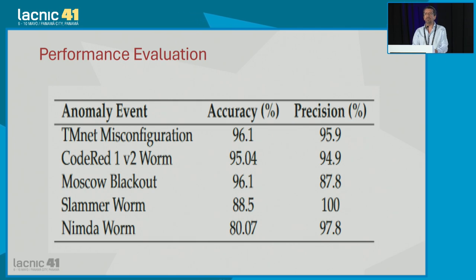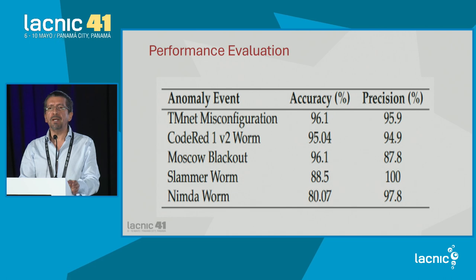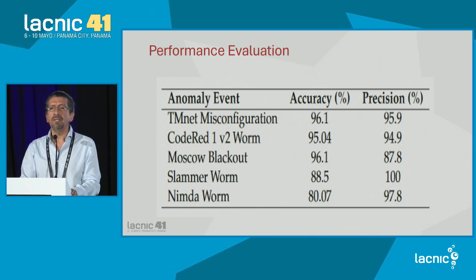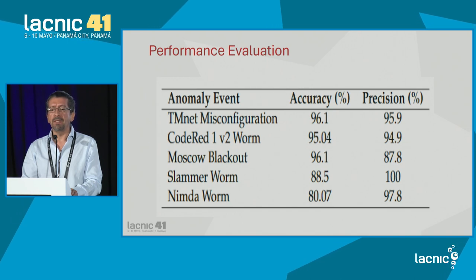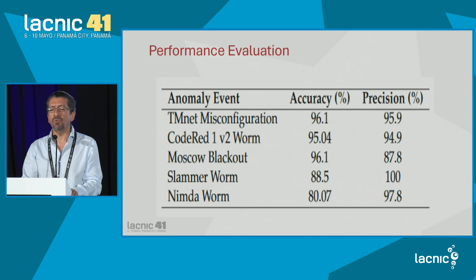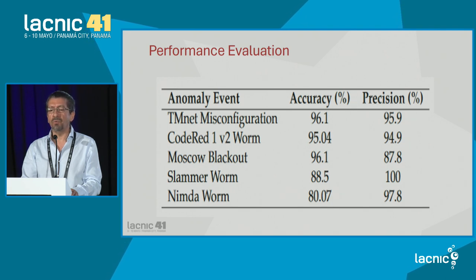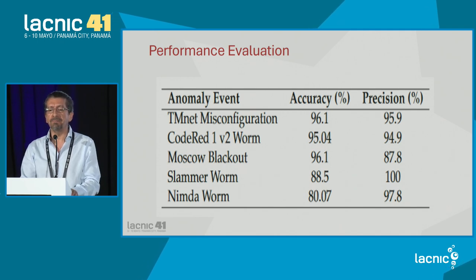The objective of this technique is that it can be used in combination with AI models — that is actually the next step. Implementing MAD combined with AI could increase accuracy for predicting anomalies in BGP traffic. The chart shows results for each event: 96% accuracy for misconfiguration and Code Red worm and the Moscow blackout, with lower accuracy for Slammer and Nimda worms. We also tested with WannaCry, reaching similar results to Nimda and Slammer.